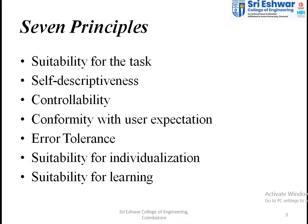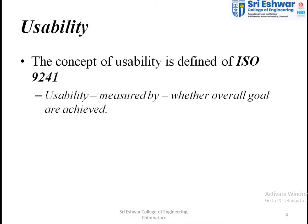The sixth principle is suitability for individualization — an individual person should be able to perform tasks on their own skill without needing support from others. For example, in a banking application, the user should be able to work independently without depending on others. The seventh and final principle is suitability for learning — it guides the user to learn the system and how to use it.